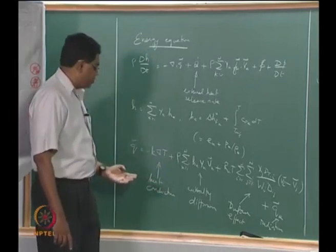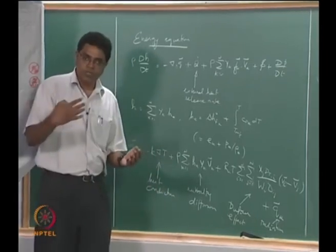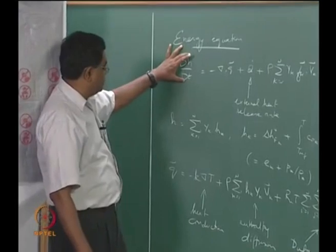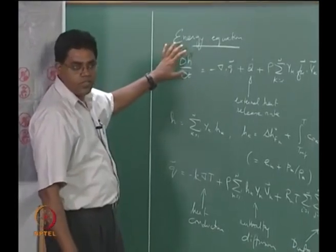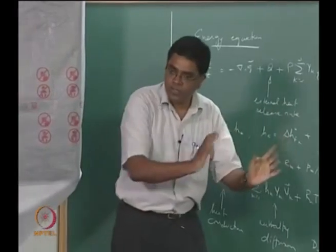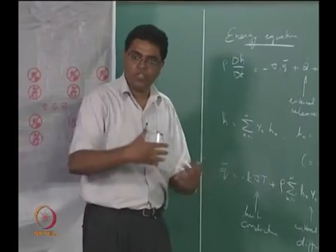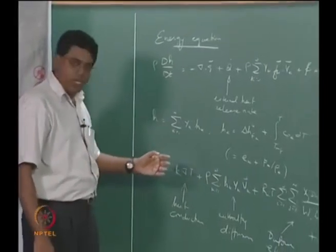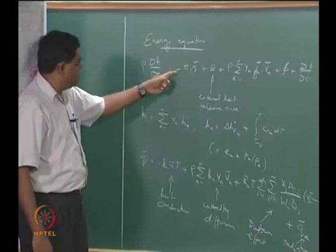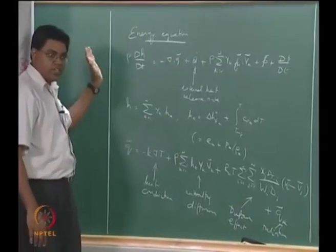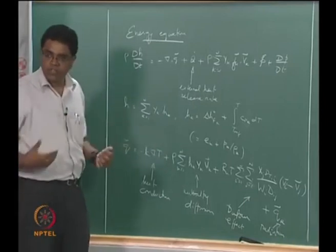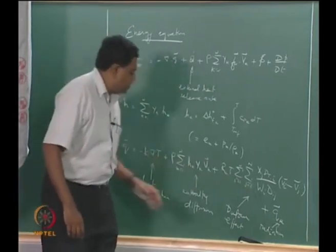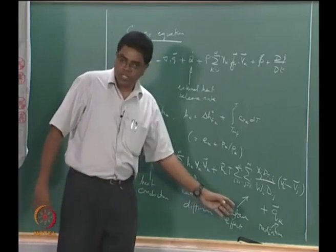This comes from the fact that you have a diffusive component of enthalpy flux in addition to the mixture-averaged convection. The mixture-averaged convection convects enthalpy at the mixture-average velocity, but in addition each species also carries its own enthalpy at the diffusion velocity. This is what this term represents, which was left out previously. The negative sign takes care of the fact that when taken to the left-hand side it adds to the actual enthalpy carried by the species.